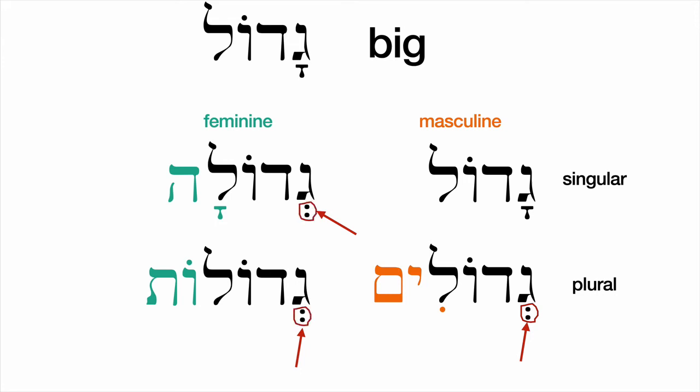Instead of gadolah, it's gadolah; and gadolot — they will each get a vocal schwa. That is a relatively minor change. And if you accidentally say gadolim, it's not the biggest mistake in the world — I would know what you meant, and a Hebrew speaker would know what you meant.